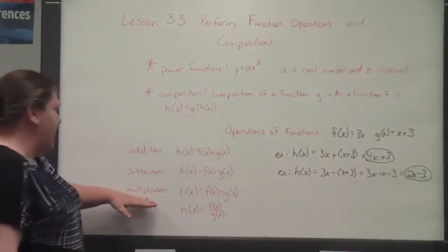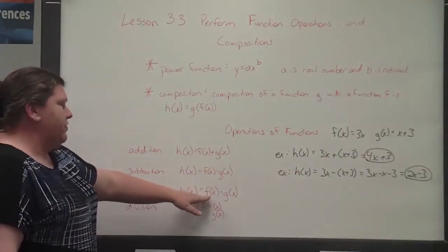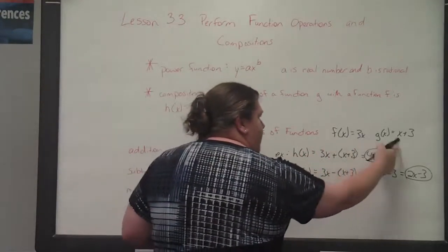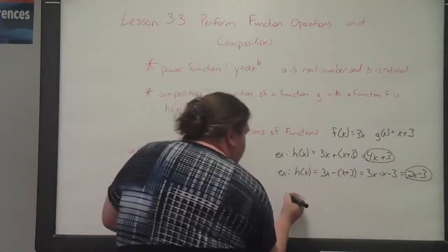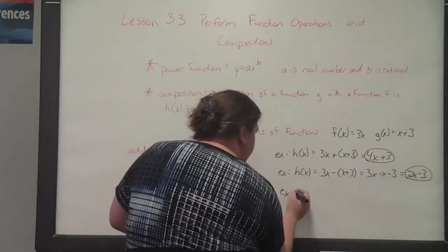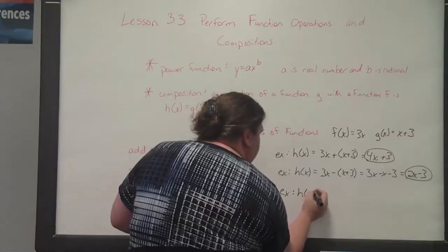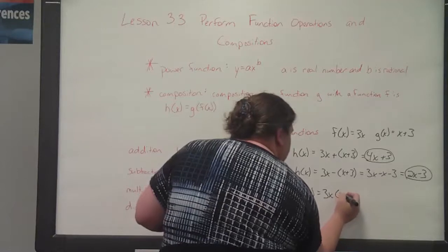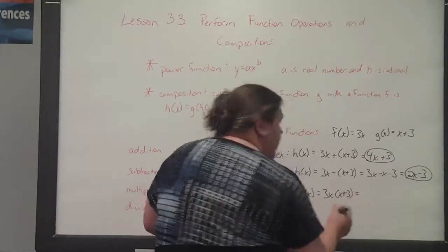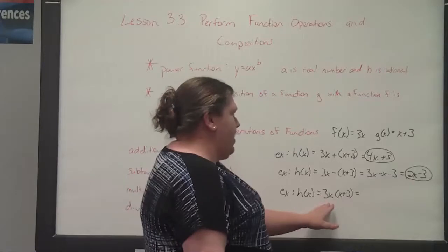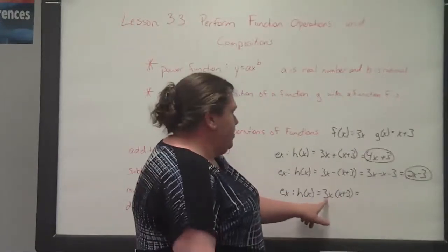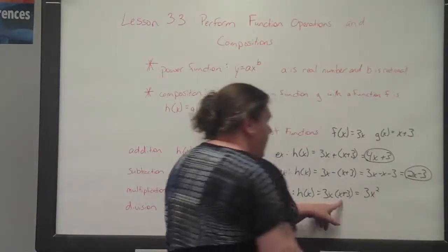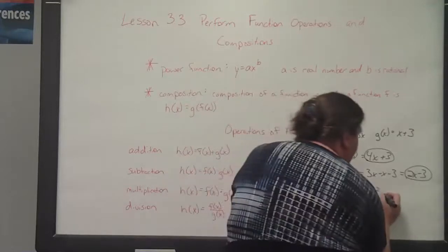For multiplication, h of x equals f of x times g of x, using the same f of x and g of x. So h of x equals 3x times x plus 3. We distribute 3x to everything in the parentheses: 3x times x gives 3x squared, and 3x times 3 gives 9x.